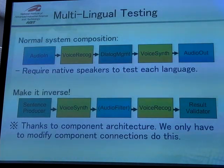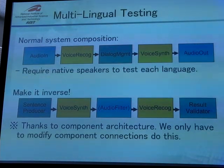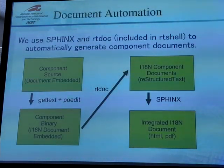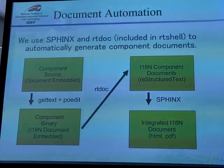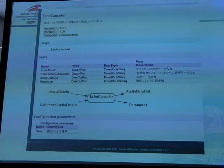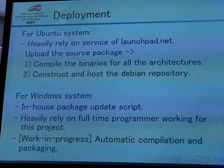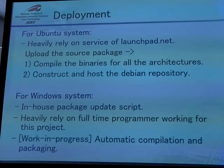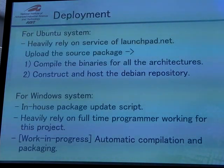This self-loop approach only required changing the connections between components, because it is totally based on component architecture. For documentation, we are introducing some kind of document automation and generating almost half of the document using these automated systems, which will help prevent mistakes in making documents. For deployment, we use the Launchpad system, which is quite useful, and I suggest everyone to use it. For Windows, it currently relies on a full-time programmer we are hiring, so we are working on some automated way to make this easier.